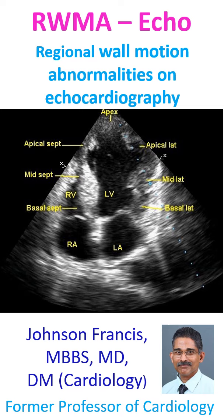RWMA on echo is otherwise known as regional wall motion abnormalities on echocardiography. It is an often noted short form on the echo report.